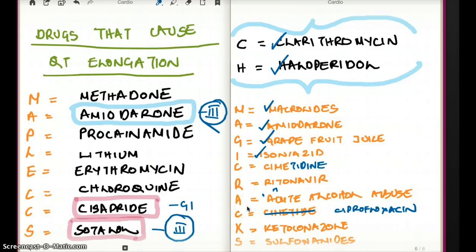So again, M for macrolides, A for amiodarone, G for grapefruit juice, I for isoniazid, C for cimetidine, R for ritonavir, A for acute alcohol abuse, C for cipro, K for ketoconazole, and S for sulfonamide. All these cause P450 inhibition.